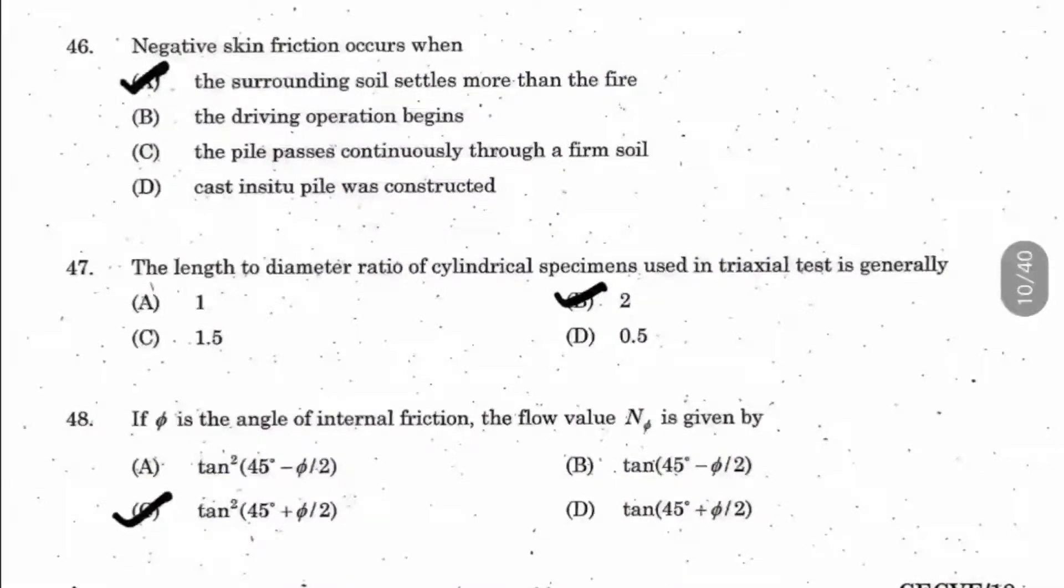Question 47: The length to diameter ratio of cylindrical specimens used in triaxial test is generally what? In triaxial test, we need to take a specimen with L by D ratio of 2. For previous questions on pile foundation, stress distribution, bearing capacity, consolidation, all lecture order links are in the description. You can learn the details there.